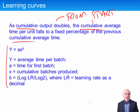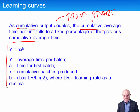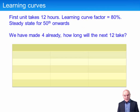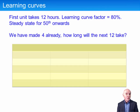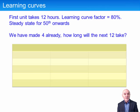It must be said that there has been no recent learning curve question, despite the current examiner stating that he thinks it's quite important. Let's look at a simple example. Here we have the data: the first unit took 12 hours, the learning curve effect is 80%, and there's going to be a steady state from the 50th unit onwards. But first, we have already made 4 units — how long is it going to take to make another 12?